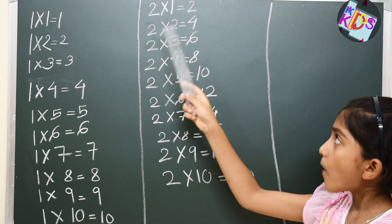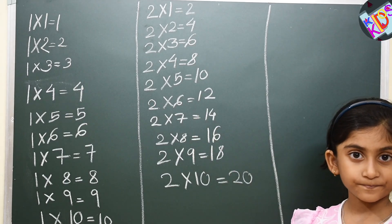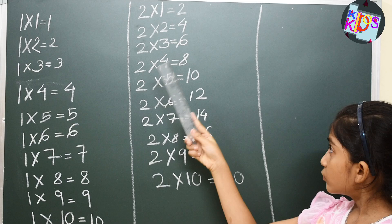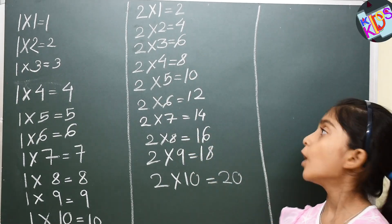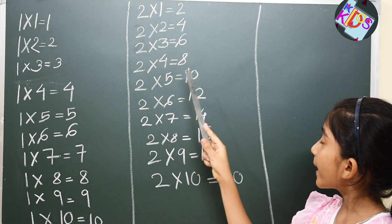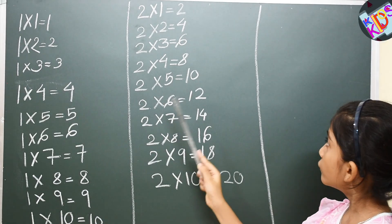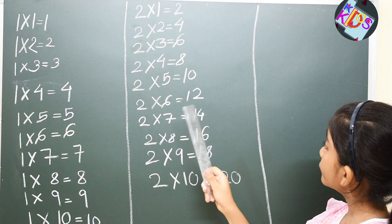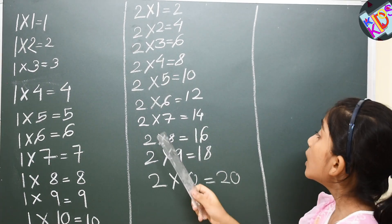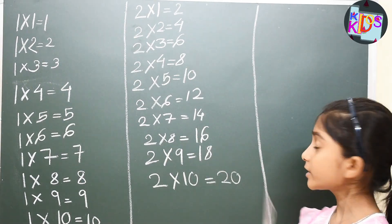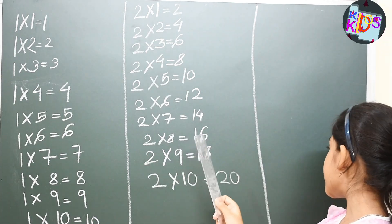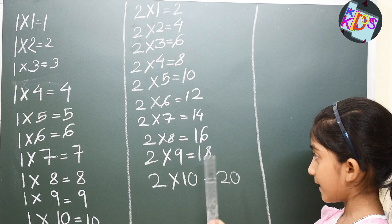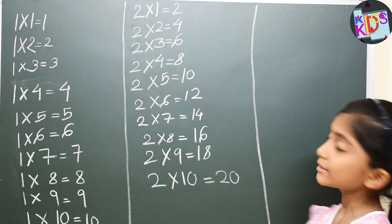Two ones are two, two twos are four, two threes are six, two fours are eight, two fives are ten, two sixes are twelve, two sevens are fourteen, two eights are sixteen, two nines are eighteen, two tens are twenty.